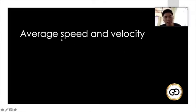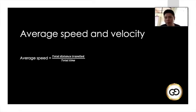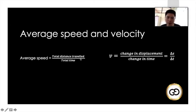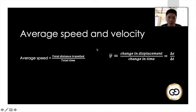Average speed and average velocity: speed is a scalar quantity, velocity is a vector quantity. Average speed is equal to the total distance travelled over the total time — distance is a scalar quantity. Average velocity uses this symbol with a small bar for average, and it's equal to the change in displacement over the change in time.